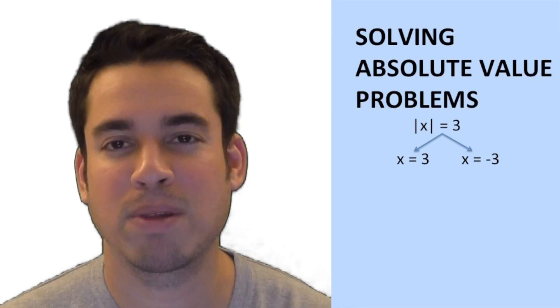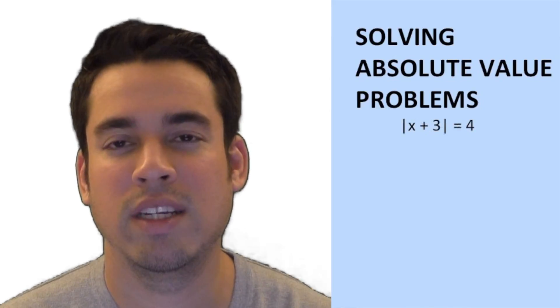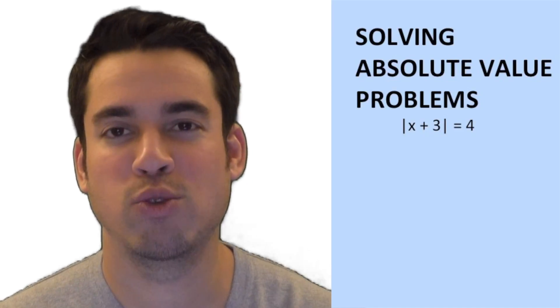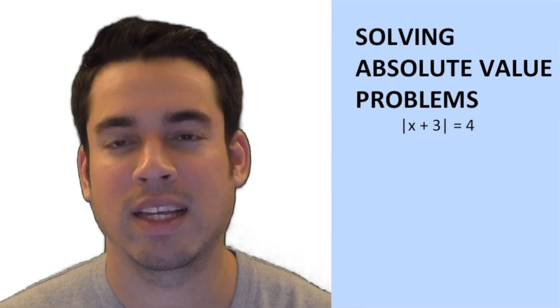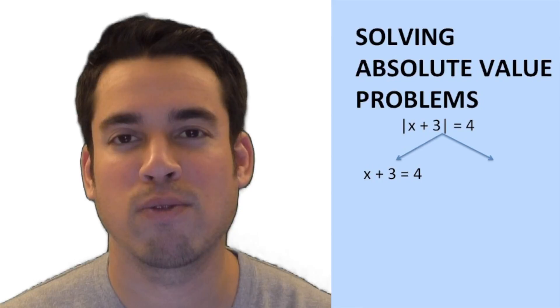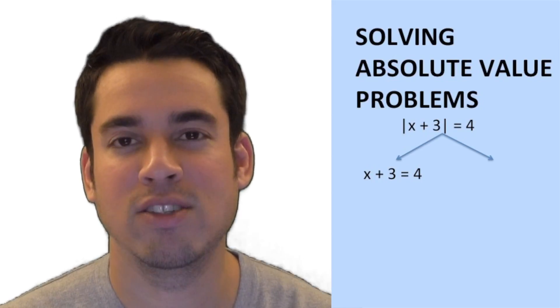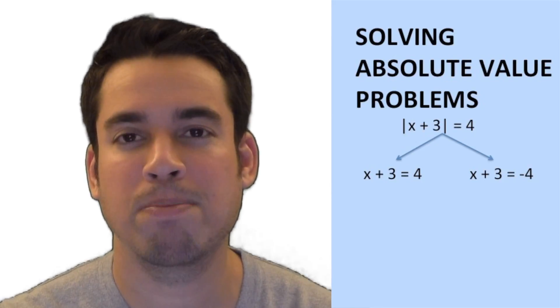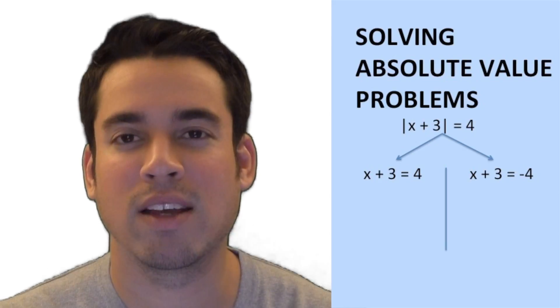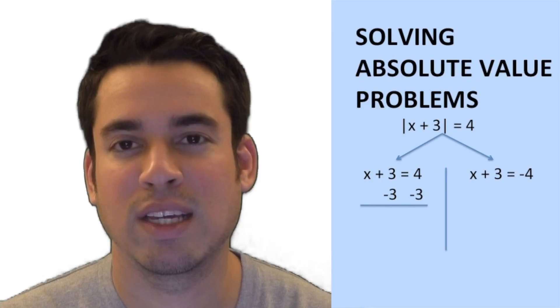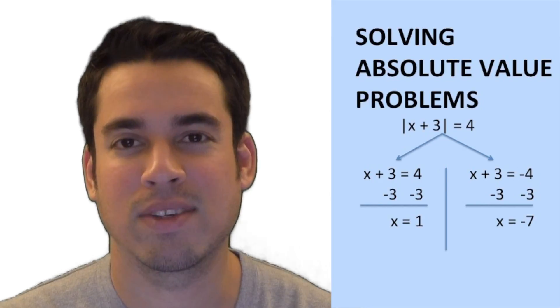Now let me give you a slightly more complicated example. Let's say we have x plus three in absolute values equals four. So now we're going to have two solutions. And how do we get those solutions? You split this into two equations. One where it's simply x plus three equals four, as if we just remove the absolute values. And the other one is x plus three equals negative four, where we flip the sign of whatever is outside the absolute value symbol. And now we just simply solve for x. So for the first equation, we get x equals one. And for the second equation, we get x equals negative seven.